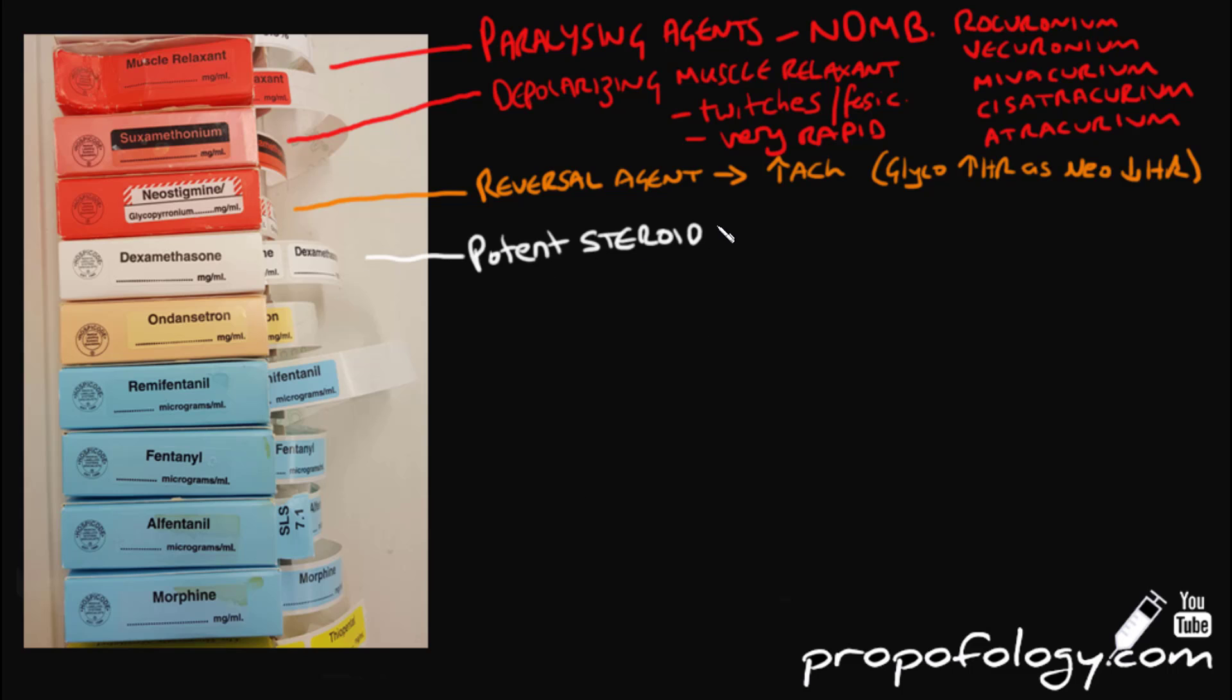Dexamethasone is used to treat nausea and vomiting. It is a potent steroid and it's an antiemetic. Ondansetron is an antiemetic drug that works at the 5-HT3 receptors. The 5-HT receptors are located in the chemoreceptor trigger zone and whenever they are blocked, they stop the impulses from the chemoreceptor trigger zone going to the vomiting centre. Antiemetics are a large topic, so we have a video for that as well.